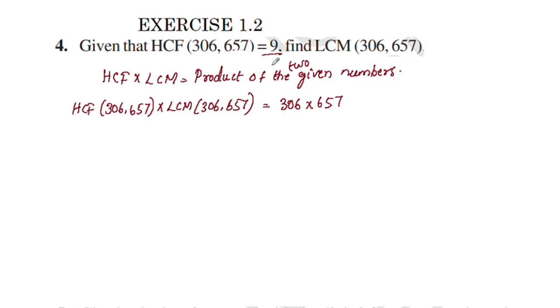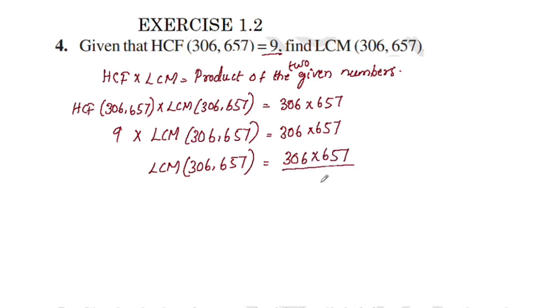This is equal to 9 into LCM of 306 and 657 equals 306 into 657. So LCM of 306 and 657 equals 306 into 657 divided by 9.